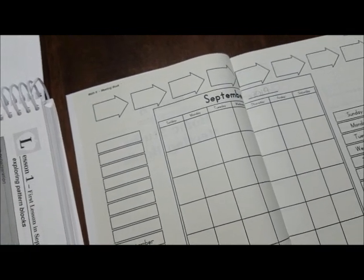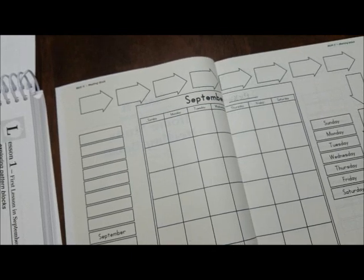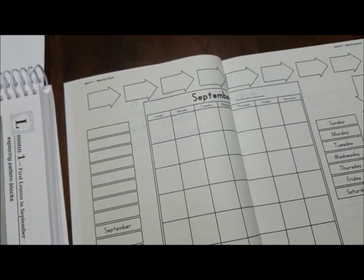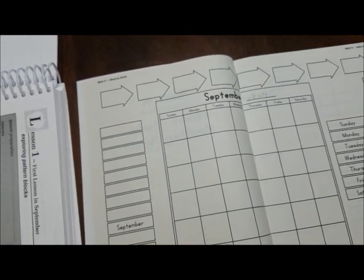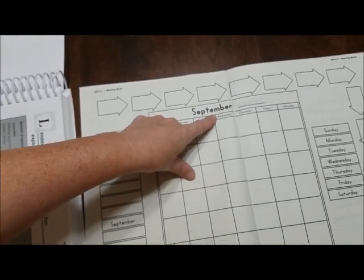Alright, this is called a calendar. We use a calendar to tell us the months, years, days of the week, and the date. Okay, so the month is what, September? September, 2019.